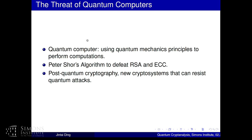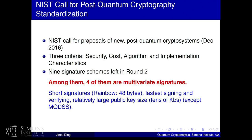Almost all topics here relate to post-quantum cryptography. We want to build new public key cryptosystems that can resist quantum computer attacks. There is a NIST call going on, now in the second round. Among all schemes, there are nine signature schemes. Among those nine, four are multivariate signatures. Multivariate signatures have interesting properties—for example, Rainbow has a signature of size 48 bytes, very fast verification, but a relatively large public key of tens of kilobytes.